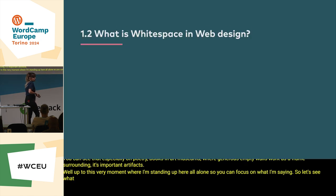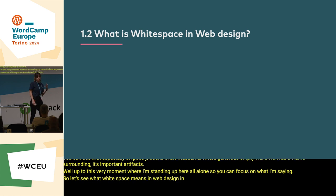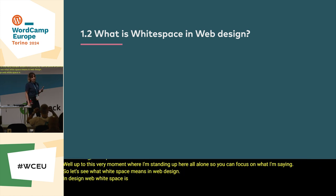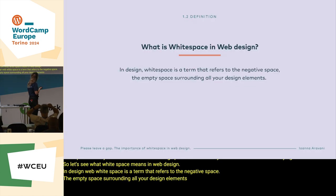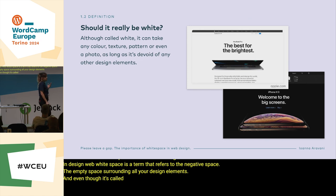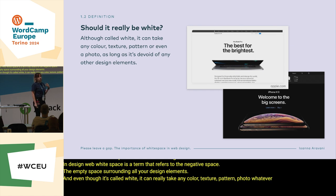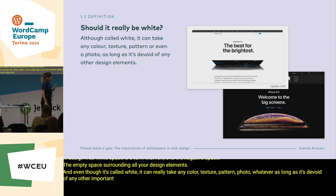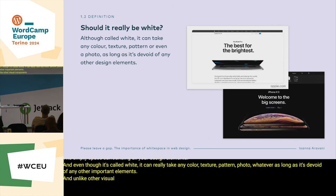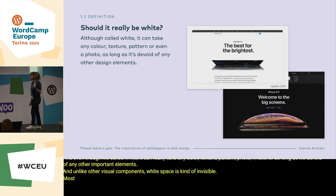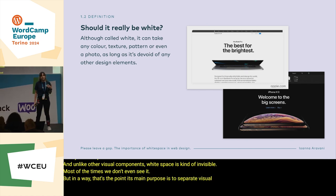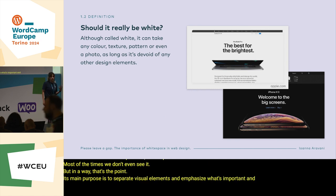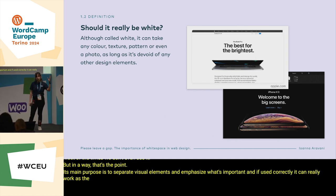Let's see what white space means in web design. In design, white space is a term that refers to the negative space — the empty space surrounding all your design elements. And even though it's called white, it can really take any color, texture, pattern, photo, whatever, as long as it's devoid of any other important elements. Unlike other visual components, white space is kind of invisible. Most of the times we don't even see it, but in a way that's the point. Its main purpose is to separate visual elements and emphasize what's important, and if used correctly, it can work as the invisible glue holding all your design together.